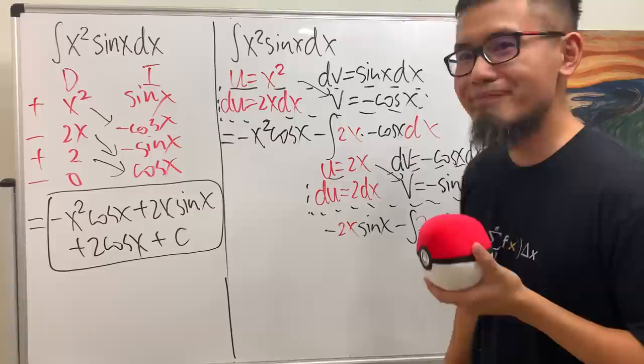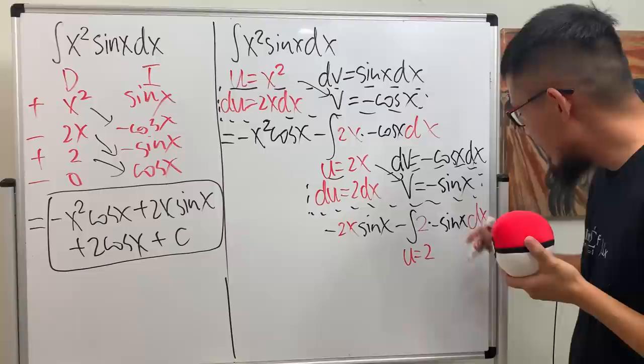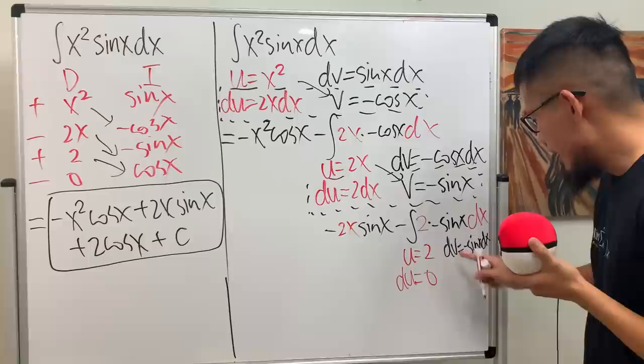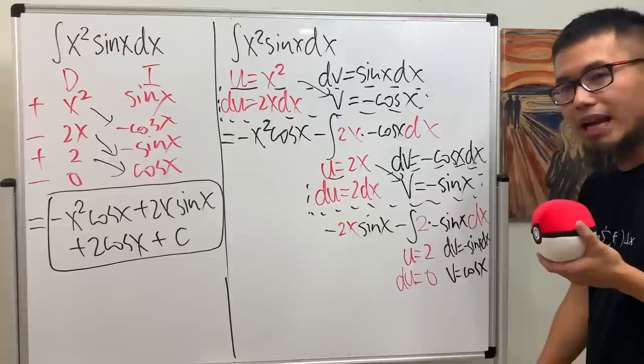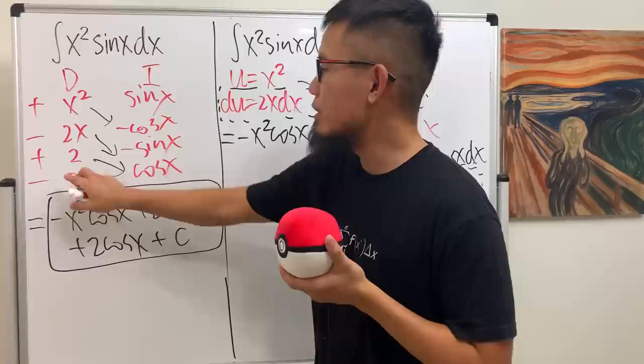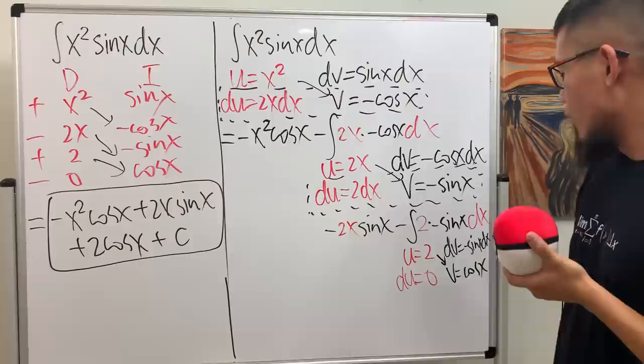This right here is actually not so bad — you don't even need to do integration by parts. Let me put U to be 2, and dV to be negative sine x dx. Then dU will be 0. Integrating dV, we get V equals cosine x. We just need to do this times that — that's the last diagonal. And when we have 0 in D, we stop, because technically you subtract the integral of 0 times something, which is just 0. The integral of 0 gives you a constant.